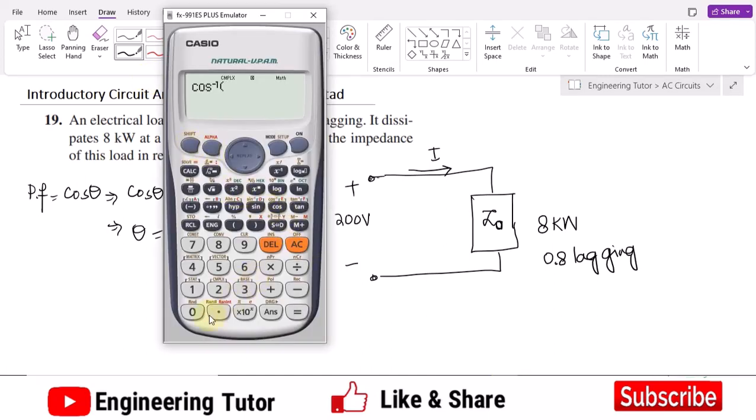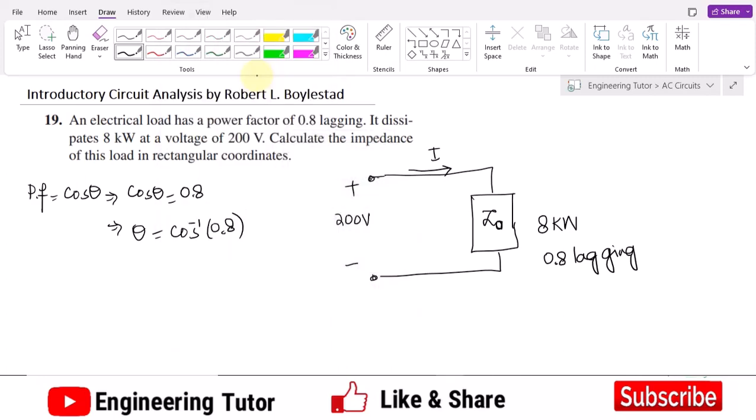Let me calculate it. So cosine inverse of 0.8, how much would it be? That is 36.87 degrees. So theta is 36.87 degrees.